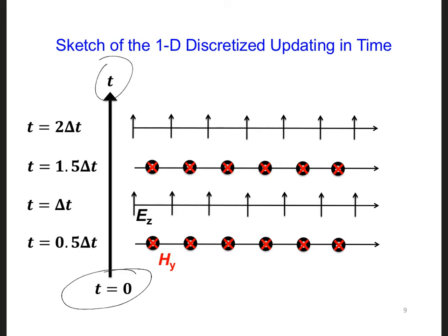You can see here that all the electric fields are evaluated at integer time steps. So at t equal delta t, we're going to update all the E_z's, t equal 2 delta t, all the E_z's again. And all the H_y's are going to be updated at half integer time steps.